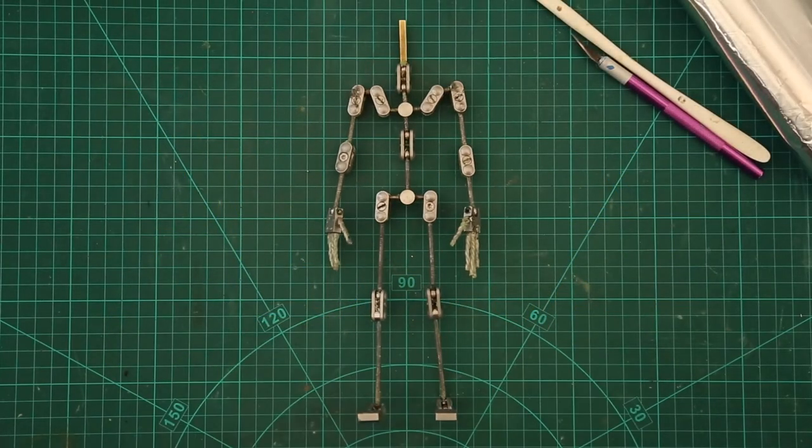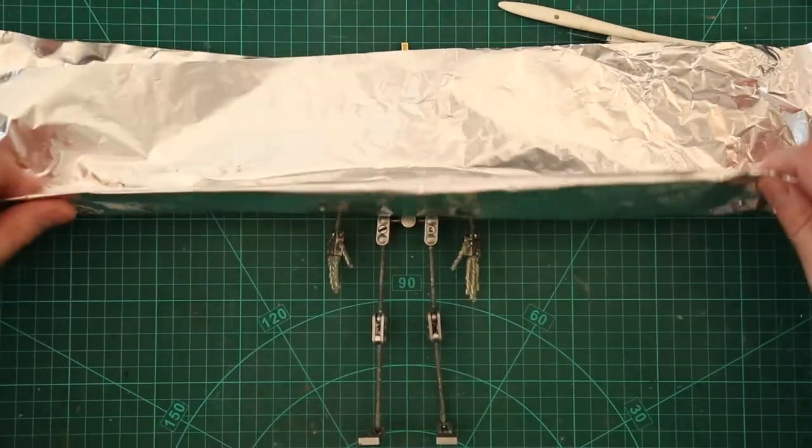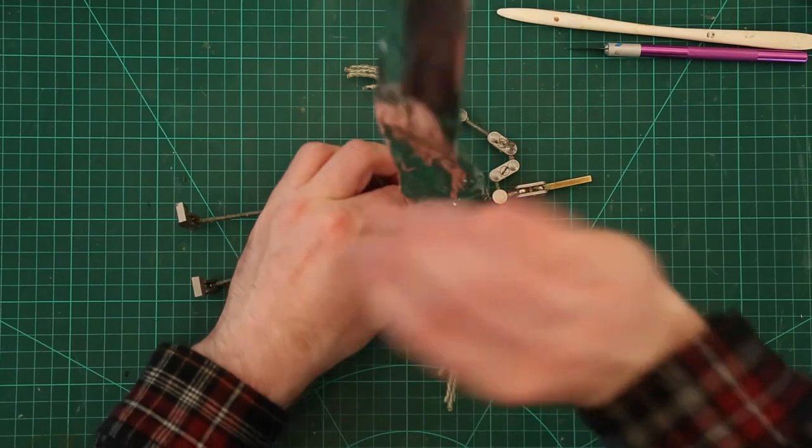Hello and welcome back to I Made This. My name's Ollie and today I am making Marty McFly from Back to the Future out of plasticine.